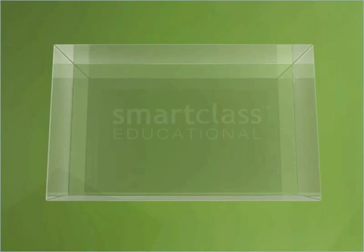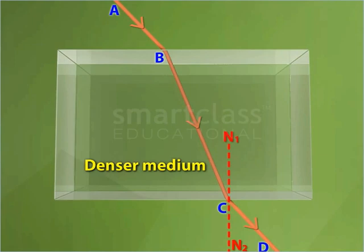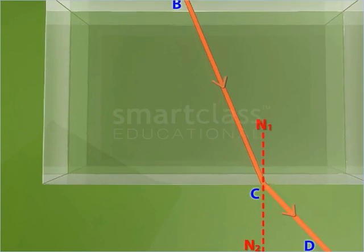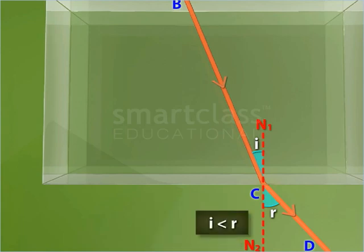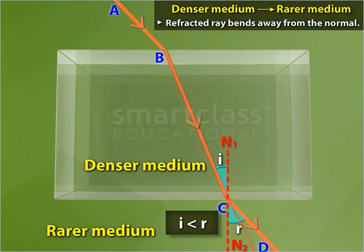In contrast, if a ray of light passes from a denser transparent medium to a rarer transparent medium, the ratio of the sine of the angle of incidence and the sine of its corresponding angle of refraction is always less than 1. So the angle of incidence is less than the angle of refraction. This signifies that the refracted ray bends away from the normal at the point of incidence.